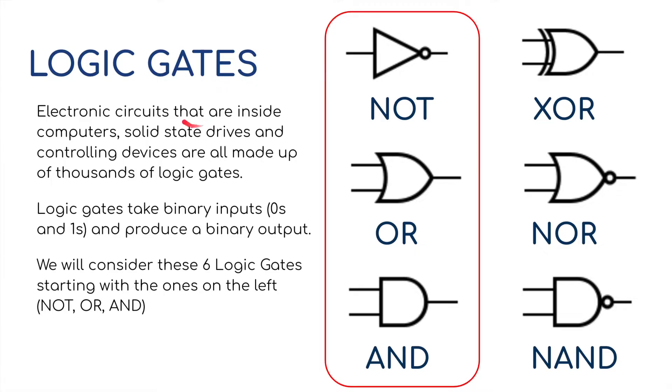So what are logic gates? Well, electronic circuits inside computers, solid-state drives, and controlling devices are all made up of thousands of logic gates. These determine the flow of the data, the flow of the 1s and 0s. Logic gates take binary inputs, 0s and 1s, and produce a binary output.